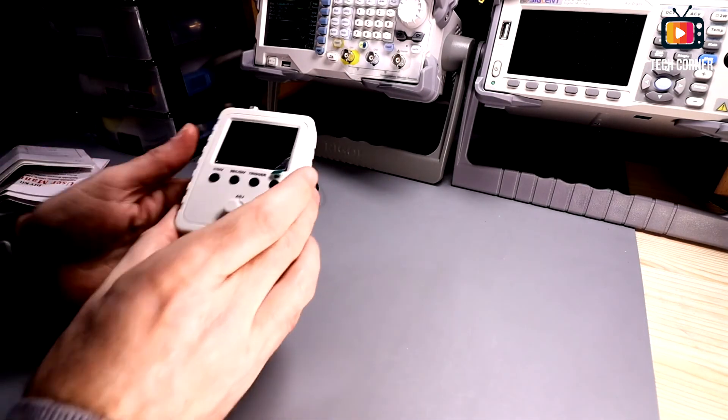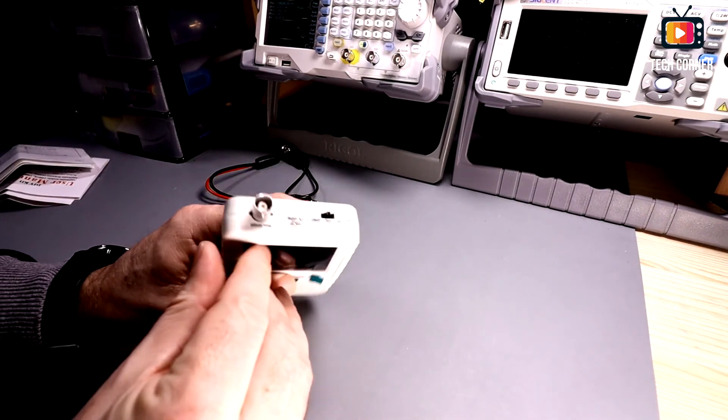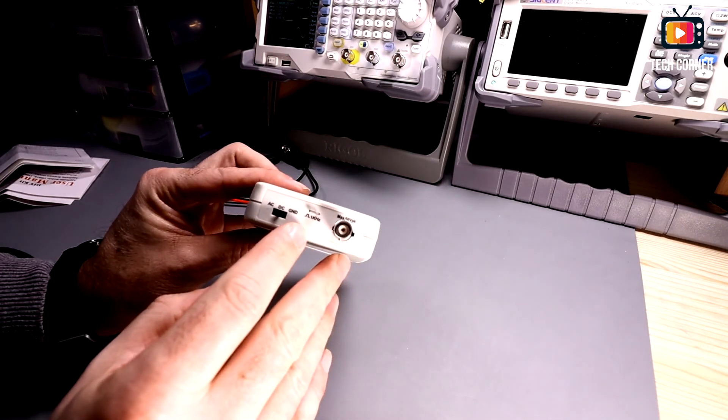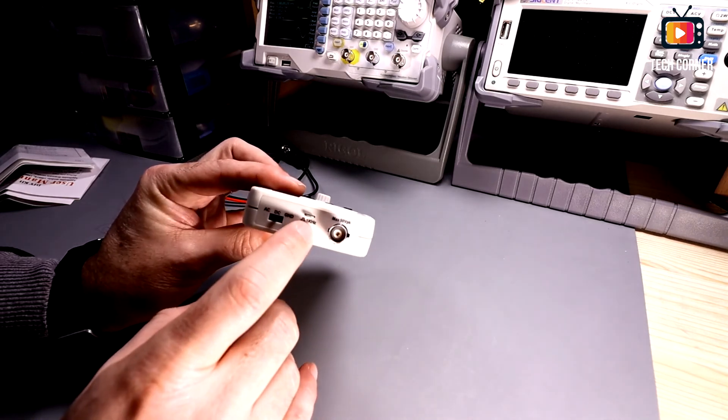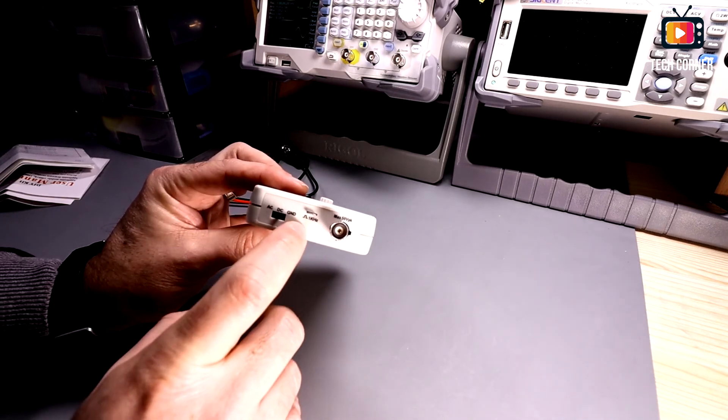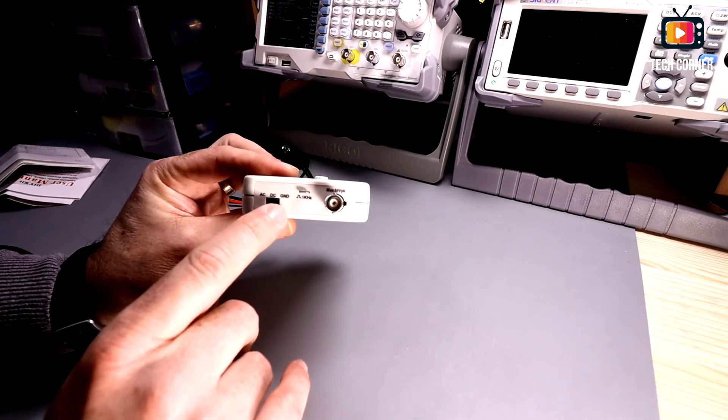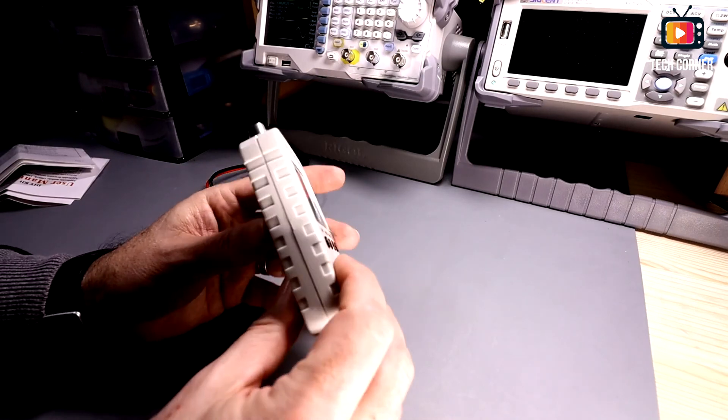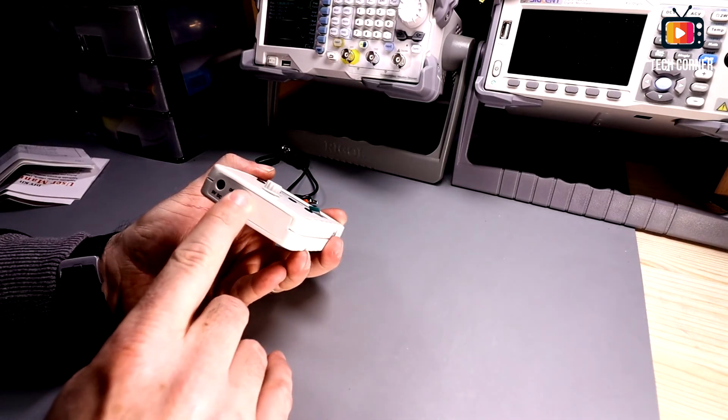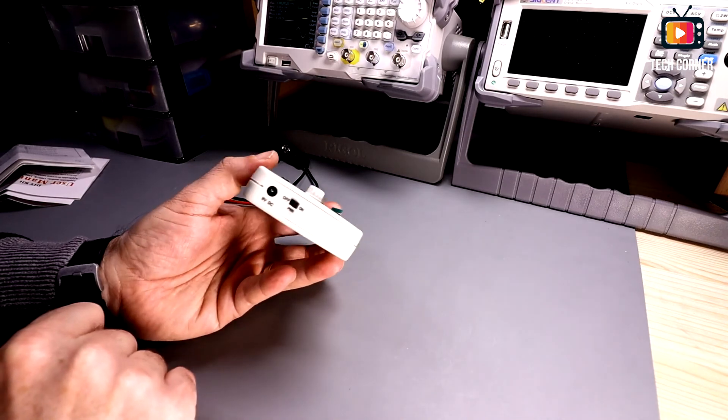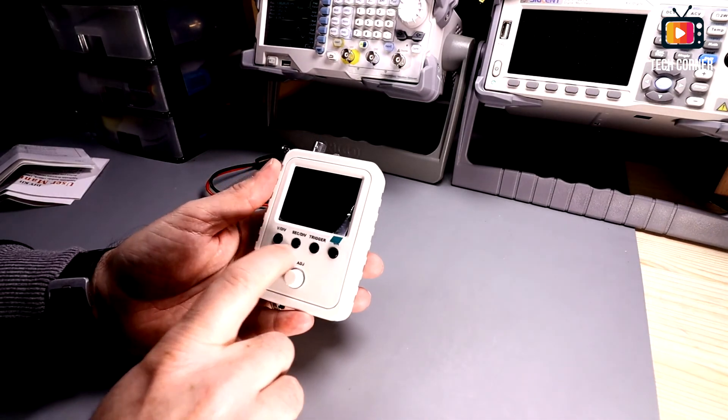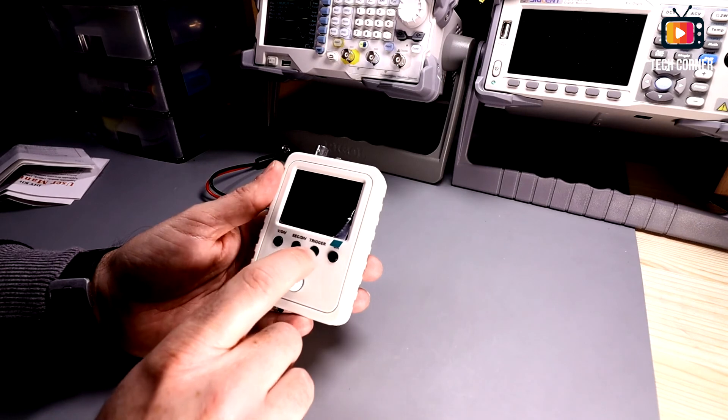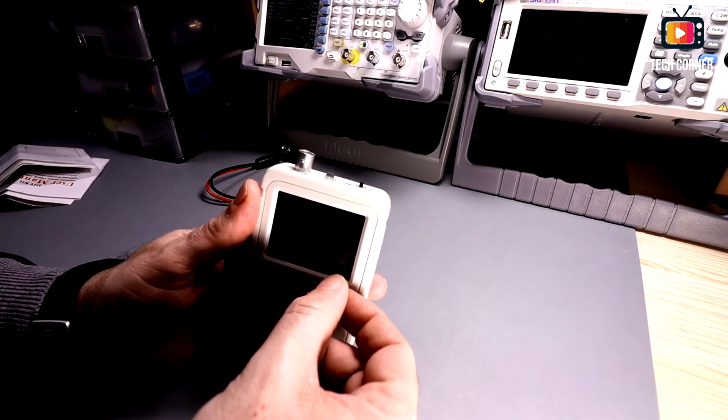So in this device we have on the top the BNC connector. We also have here a square wave generator for calibration and for test. On the left it has the coupling switch where we select AC, DC or ground. Let's leave it in DC for now. On the back we have the on off switch and the power supply socket. In the front it has four buttons and the knob. The vertical position, the horizontal position, the trigger button and the hold button.